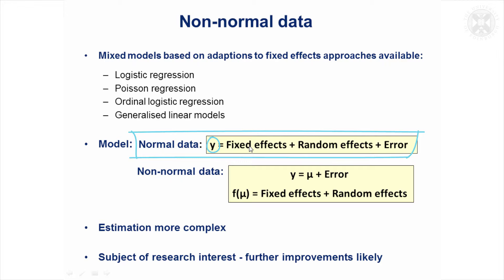And that's all on a linear scale. If we've got non-normal data, the trick that's played is that we say that the outcome is equal to this vector, mu, which is a vector of expected values, predicted values, for a given observation plus the error.